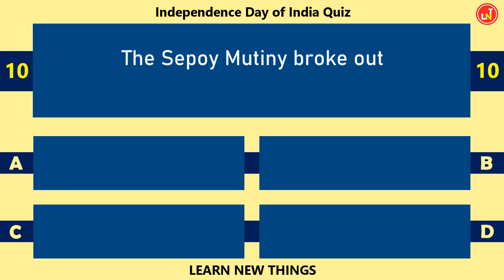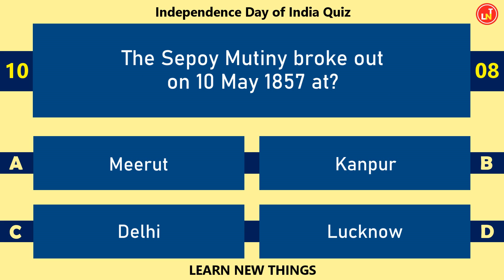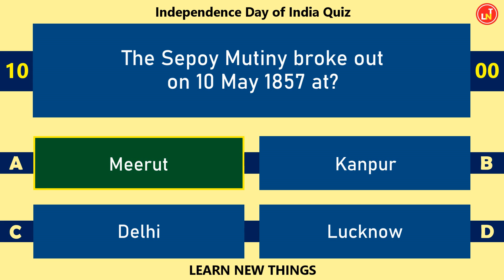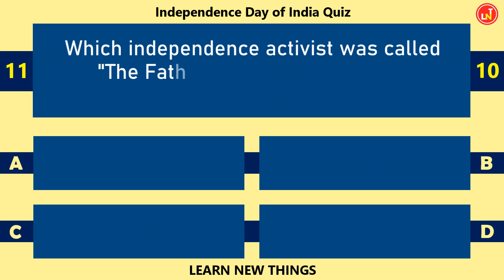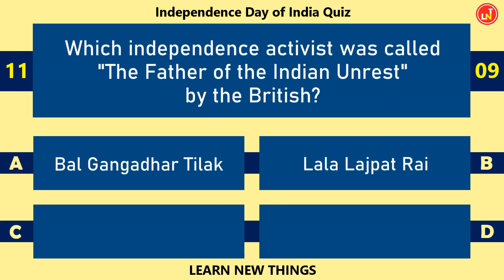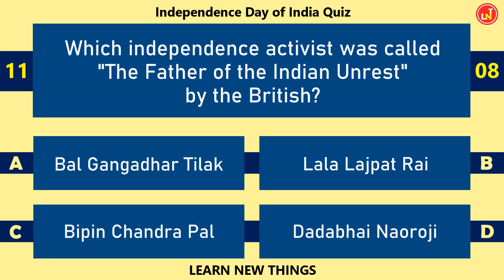The Sepoy Mutiny broke out on 10 May 1857 at Meerut. Which independence activist was called the father of the Indian unrest by the British?